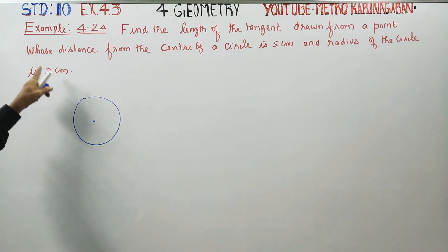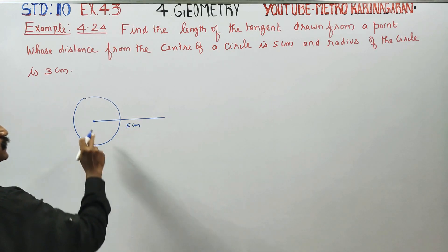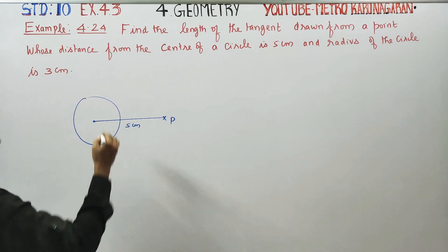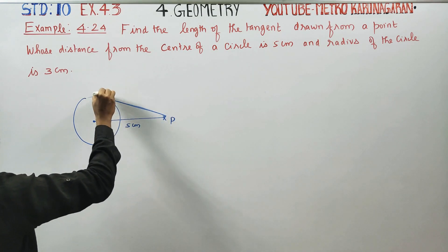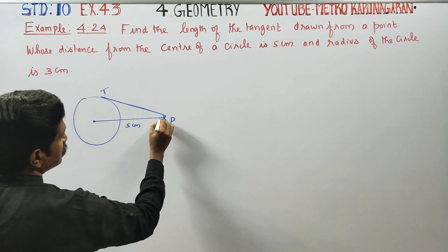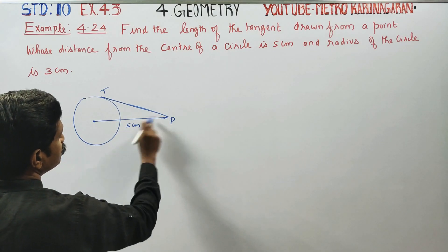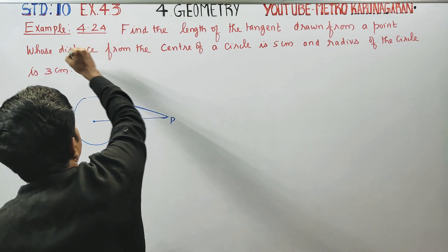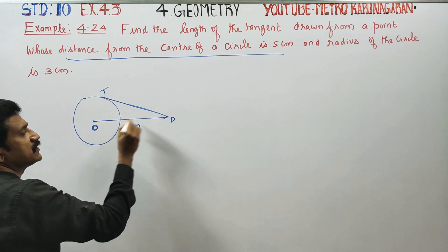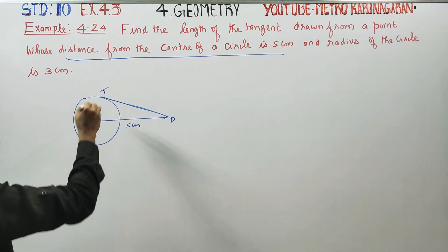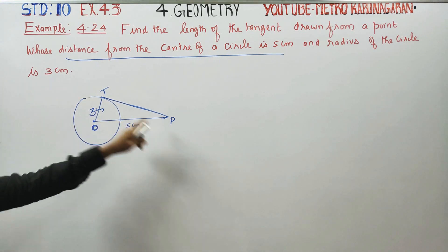We have to find the length of the tangent drawn from a point whose distance from the center of the circle is 5 centimeters. This is my point. The distance from the center of the circle is 5 centimeters, and the radius is 3 centimeters. That is the length of the tangent we need to find.